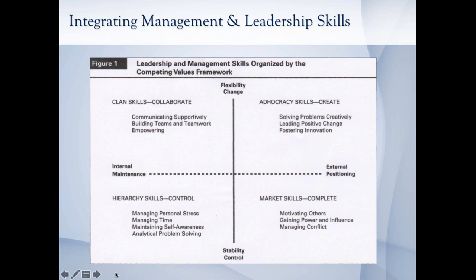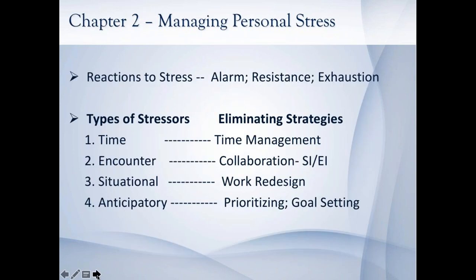The reason I raise that is the same dimensions of internal, external, control, and flexibility are also used by the authors because they're trying to give you a sense of continuity. It's not a one-off chart that you never see again, but the same kinds of dimensions operate if you use those same attributes and skills with the same kind of dimensions. So that's our matrix.